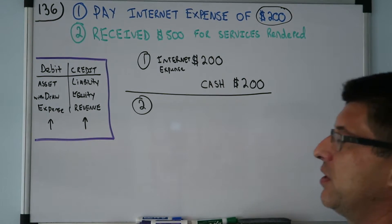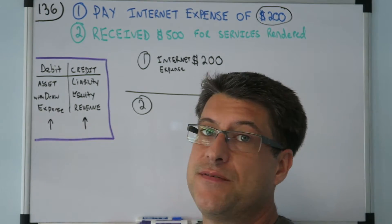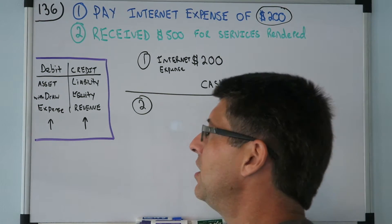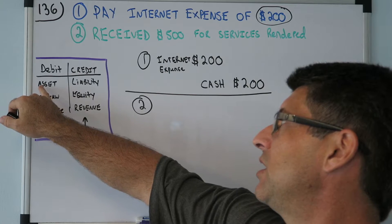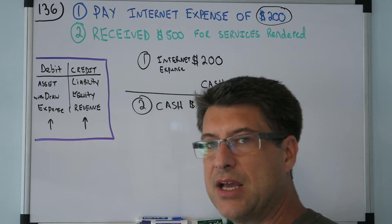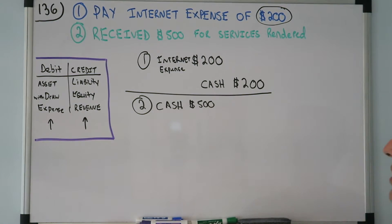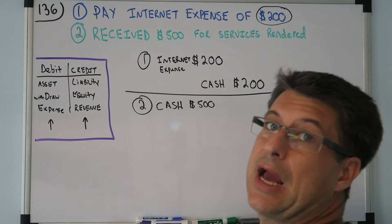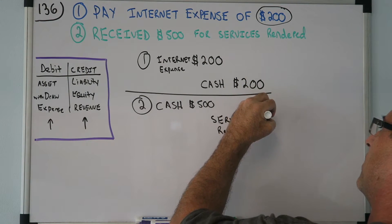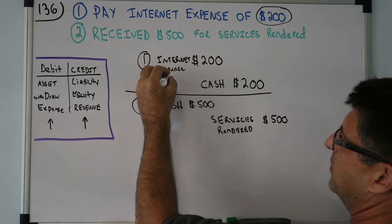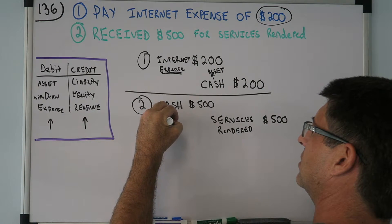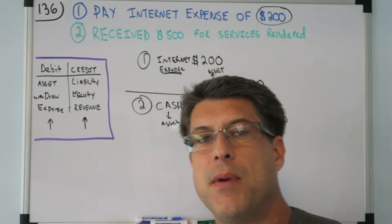Journal Entry 2: receive $500 for services rendered. We know cash is an asset. Per DC ADE/LER, cash is an asset and it's increasing in value, so we debit Cash $500. Why did we get the cash? For services rendered — that's revenue, so we credit Services Rendered $500. Debits and credits match.